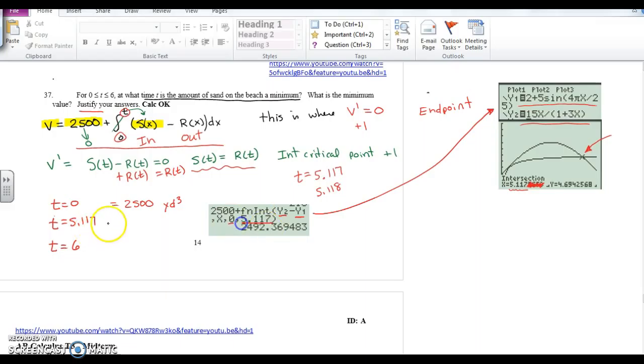Here we have 2492.369 cubic yards. When you do this same integral going from 0 to 6 instead of 0 to 5, you get 2493.277 cubic yards.